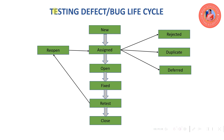The next status is assign. Assign status means the testers have logged the defect with new status, and the testers assign it to the development team. The development lead will verify and assign accordingly.